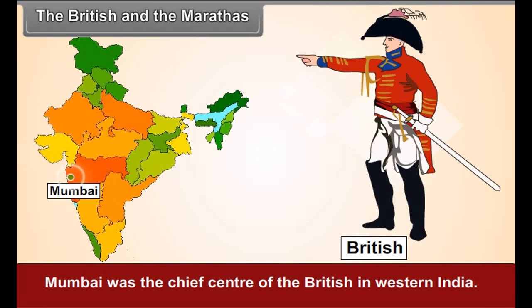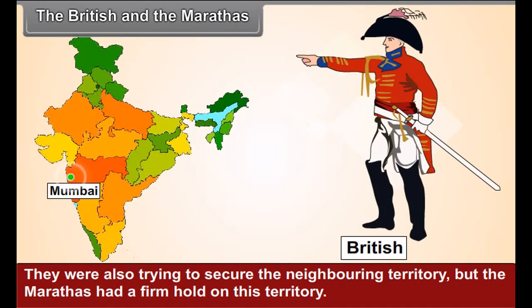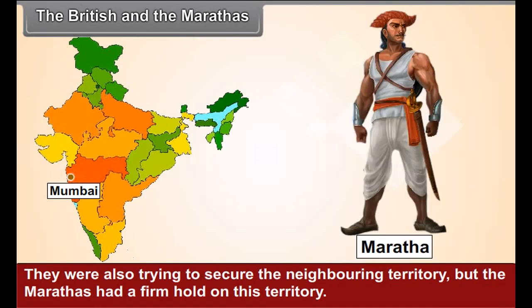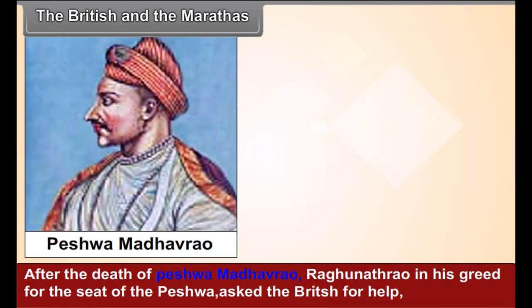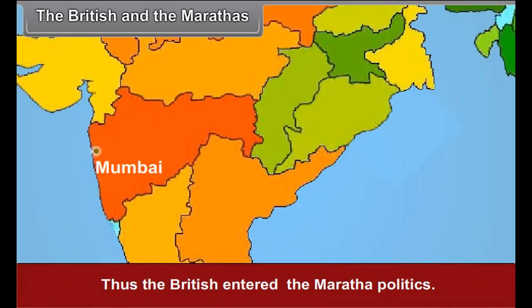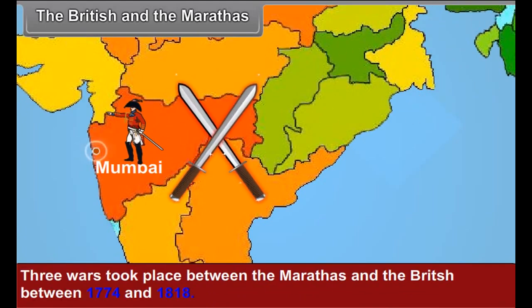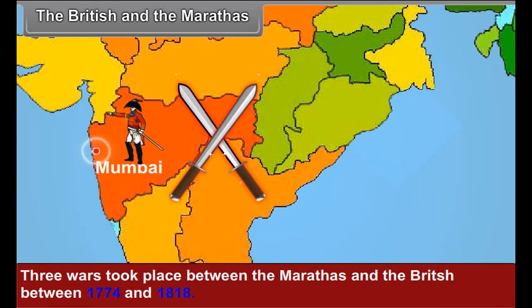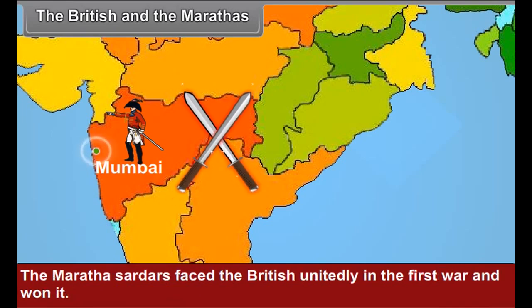The British and the Marathas: Mumbai was the chief centre of the British in western India. They were trying to secure the neighbouring territory, but the Marathas had a firm hold on it. After the death of Peshwa Madhav Rao, Raghunath Rao, in his greed for the seat of the Peshwa, asked the British for help, thus allowing the British to enter Maratha politics. Three wars took place between the Marathas and the British between 1774 and 1818. The Maratha Sardars faced the British unitedly in the First War and won it. The First Anglo-Maratha War ended with the Treaty of Salbai in 1782.